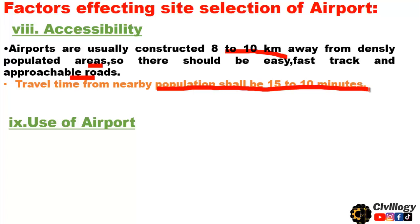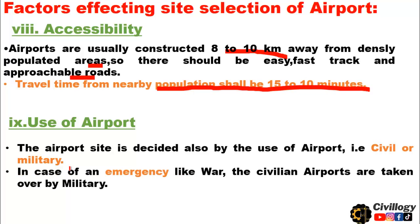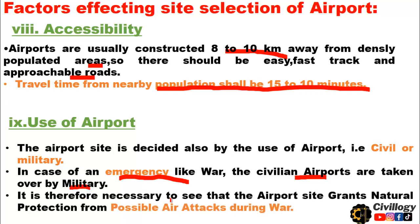The ninth point is the use of the airport. The airport site is decided also by the use of the airport — that is, the purpose of the airport, whether it is civil or military. In case of an emergency like war, civilian airports are taken over by the military. It is therefore necessary to see that the airport site grants natural protection from possible air attacks during war.